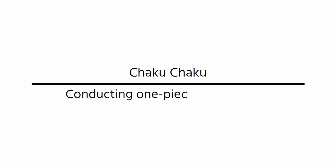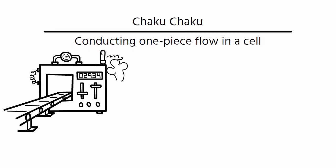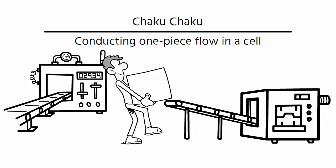Chakuchaku is a method of conducting one piece flow in a cell, which basically means that you can carry a part directly from one machine to the next without stopping to unload the part.